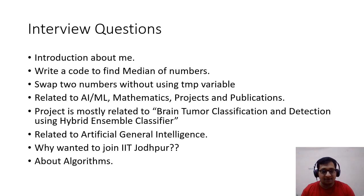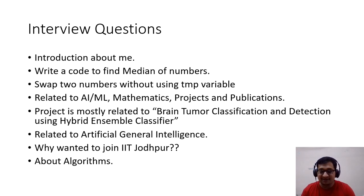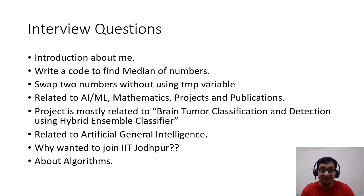I had selected ML and Artificial General Intelligence as my areas of interest in the application form. A professor asked what I understood by AGI. I explained that AI is broadly classified into two types: Artificial Narrow Intelligence — which includes supervised and reinforcement learning we use today — and Artificial General Intelligence, the advanced level where you can build robots that mimic human beings.